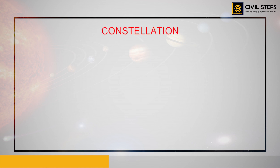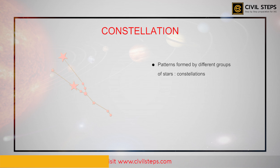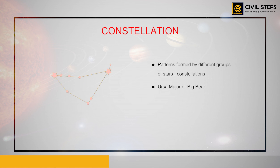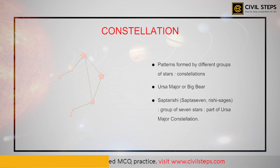What are constellations? While watching the night sky, we may notice various patterns formed by different groups of stars. These are called constellations. Ursa Major, or Big Bear, is one such constellation. One of the most easily recognizable constellations is the Sapta Rishi — 'Sapta' meaning seven and 'Rishi' meaning sages. It is a group of seven stars that forms part of the Ursa Major constellation.